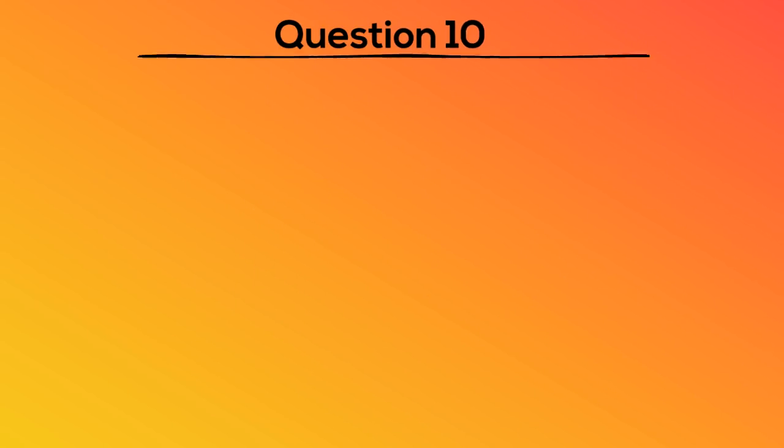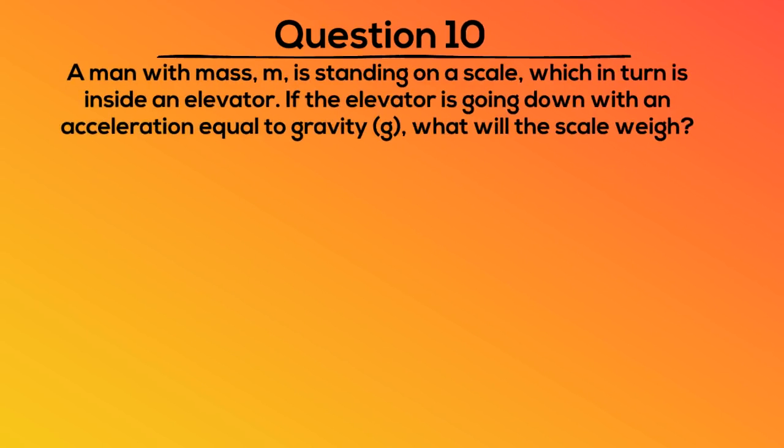Question 10. A man with mass, m, is standing on a scale, which in turn is inside an elevator. If the elevator is going down with an acceleration equal to gravity, what will the scale weigh? A. Mg. B. 2mg. C. Negative mg. Or D. Zero.